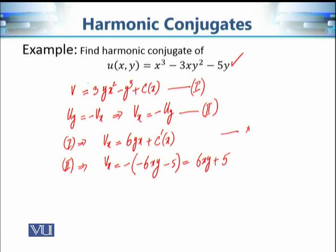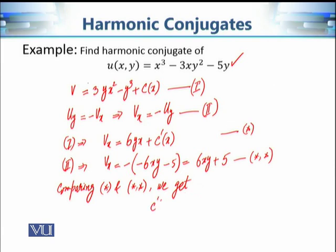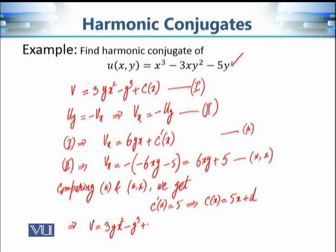Comparing Equation 1★ and Equation 2★, we get C'(x) = 5, which implies C(x) = 5x + D, where D is a constant of integration. Substituting back into Equation 1, V = 3yx² - y³ + 5x + D. This is the harmonic conjugate of U.